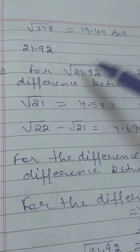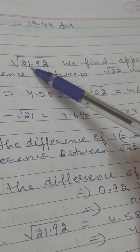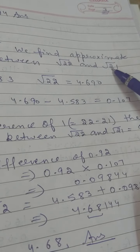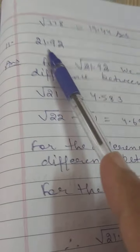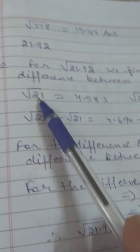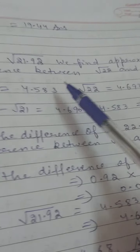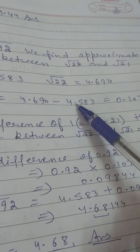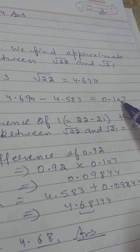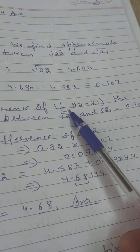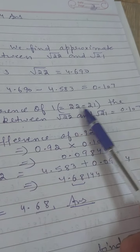11th question: find square root of 21.92. For square root of 21.92, we find the approximate difference between square root of 22 and square root of 21, because 22 is the next integer after 21. Square root of 21 is 4.583 from the table, and square root of 22 is 4.690. So square root of 22 minus square root of 21 equals 4.690 minus 4.583, which is 0.107. This is the difference for a difference of 1 (i.e., 22 minus 21 = 1).